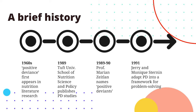The concept of positive deviance — which we use interchangeably with community-led problem solving — was first noted in nutrition literature research way back in the 1960s. It wasn't further developed at that time, and then in 1989, the Tufts University School of Nutrition Science and Policy began publishing studies related to positive deviance, identifying a few key areas where they saw deviant behavior and potential outliers in the field of nutrition.